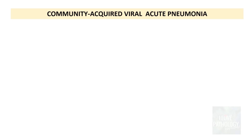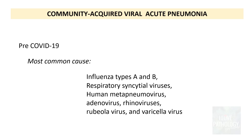What is community acquired viral pneumonia? Let's talk about this in the context of COVID-19. Pre-COVID-19, before 2019 and 2020, the most common causes were influenza types A and B, respiratory syncytial virus, human metapneumovirus, adenovirus, rhinoviruses, rubeola viruses and varicella virus. But presently, SARS-CoV-2 is implicated as the most common cause of viral pneumonia in the community.